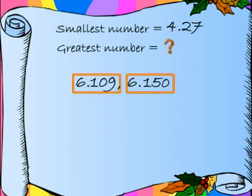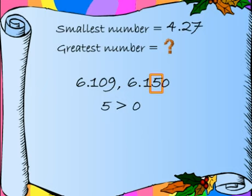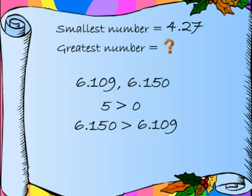These 2 numbers. What do we do now? The tenths digits are same in both these numbers. Now we need to compare the hundredths digits. What are those digits? 0 and 5. 5 is greater than 0. This means that 6.150 is greater than 6.109.